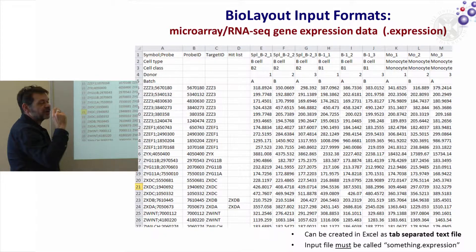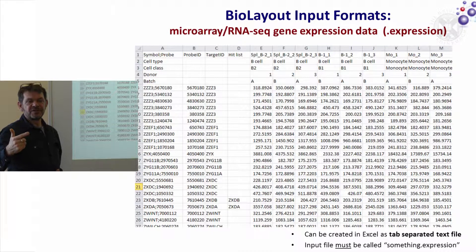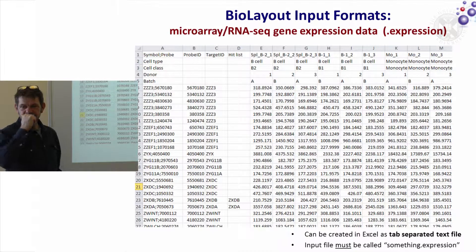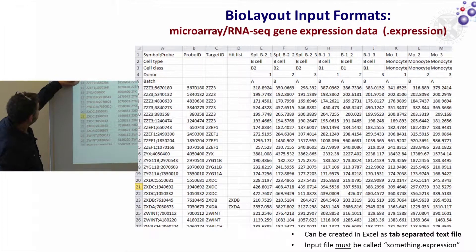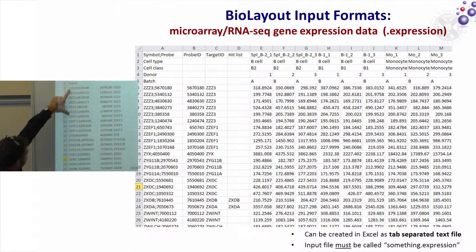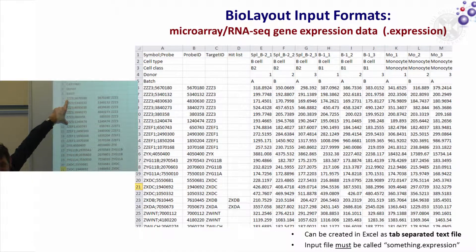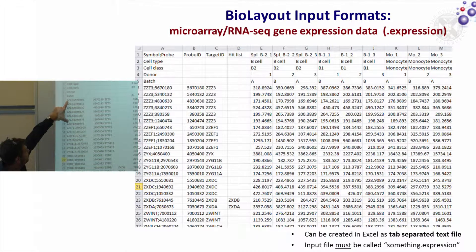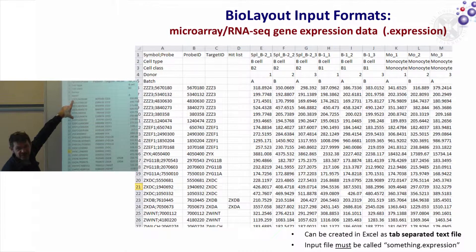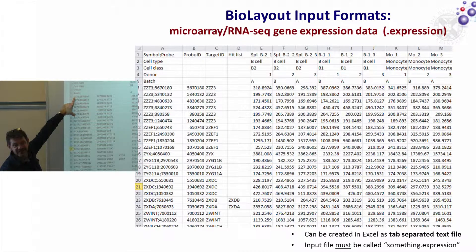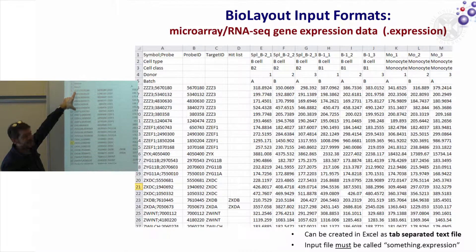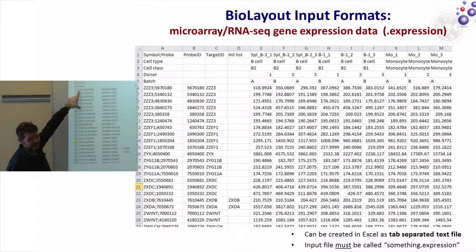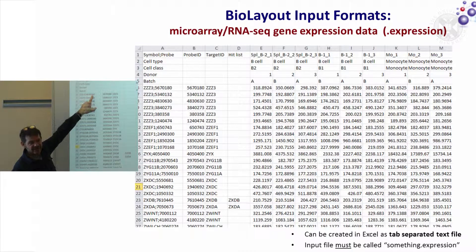On microarray experiments you often have multiple probes for the same gene. For example, ZZZ3 may be represented six times on that array. If you put just ZZZ3 in the first column, that's not a unique identifier because there are six nodes potentially with that same label — it won't know which one you're talking about and will not generate six separate nodes of ZZZ3. That's why you need to put the unique identifier in the first column.